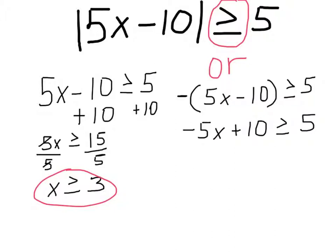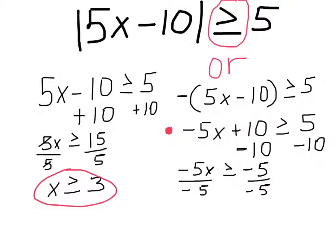For the second inequality, we are going to distribute the negative sign. That is going to give us negative 5X plus 10 is greater than or equal to five. Subtract the 10 on both sides. That gives us negative 5X is greater than or equal to negative five. Now divide both sides by negative five. When you divide or multiply by a negative, you have to change the direction of the inequality. So that is going to give us X is less than or equal to one.